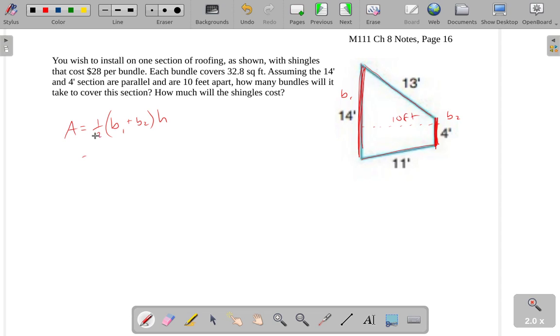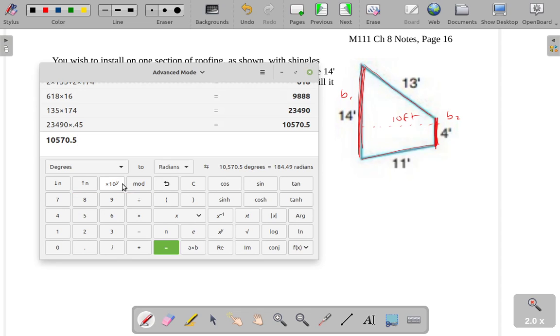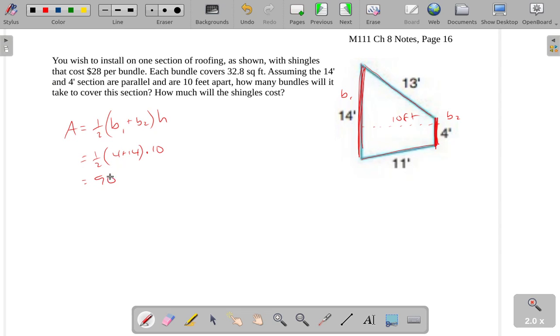So now I can actually see what the area of this particular section of roof is. It'll be 1 half times 4 plus 14 times 10. So we've got 0.5 times 18 times 10, which gives us a total square footage of 90, 90 square feet.